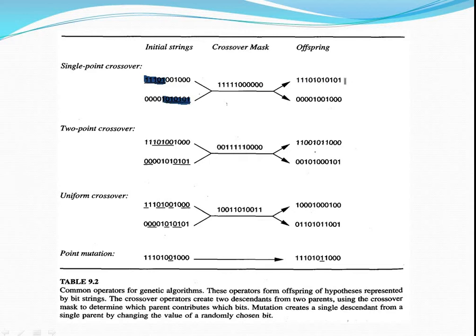To form the second offspring, the same crossover mask is used but the roles are changed. The first five bits are taken from the second parent and the remaining six bits from the first parent. By applying the crossover operator like this, two new offspring are generated.